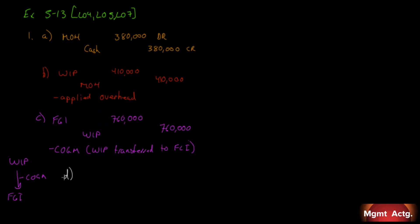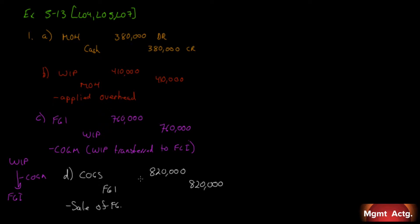Finally, entry D: we see $820,000 leaving our finished goods inventory and $820,000 being debited to cost of goods sold. Cost of goods sold increases by $820,000 and finished goods inventory decreases by $820,000. That's recording the cost of the sale of finished goods.